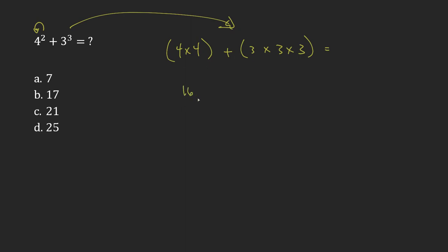So 4 times 4, that's 16. 3 times 3 times 3, well 3 times 3 is 9, times 3 is 27.